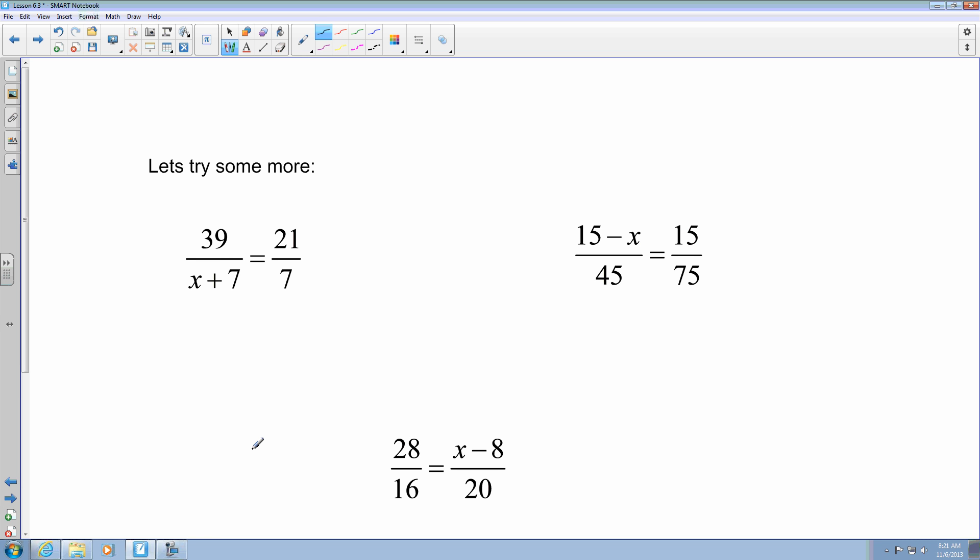So just taking a look at some more examples. I have 39 over x plus 7 equals 21 over 7. And I'm going to do the cross product, so that gives me 21 multiplied by x plus 7 equals 39 times 7, which gives me 273.